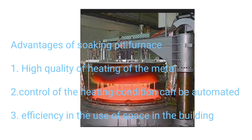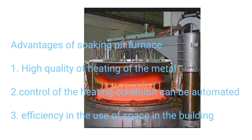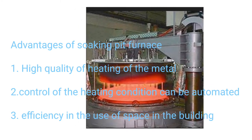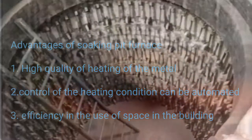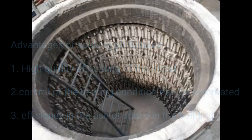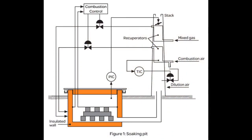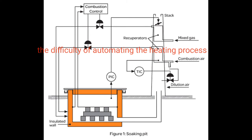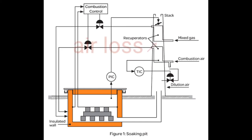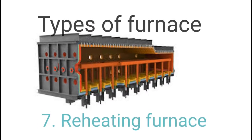Advantages of soaking pit furnace: 1. High quality heating of the metal. 2. Control of the heating condition can be automated. 3. Efficiency in the use of space in the building. Disadvantages: 1. Inadequate design of the fuel combustion system and difficulty of automating the heating process. 2. Air loss in the recuperators for soaking pits with heating from the center of the bottom.